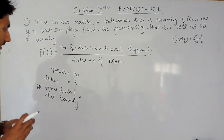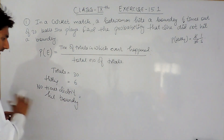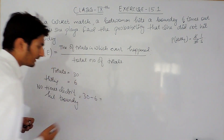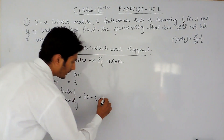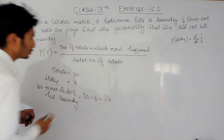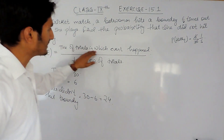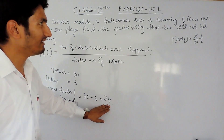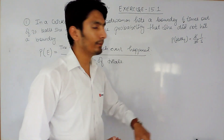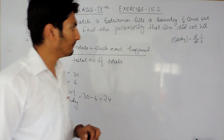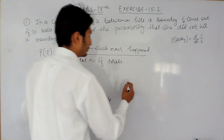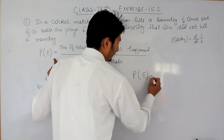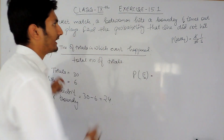The number of times this batswoman wasn't able to hit a boundary was 24 times. So the total number of trials in which the event happened is 24, where the event is not being able to hit the boundary.